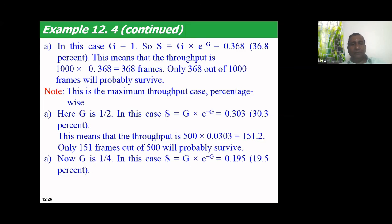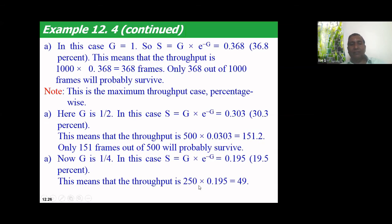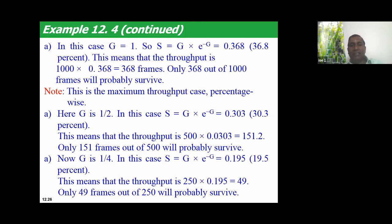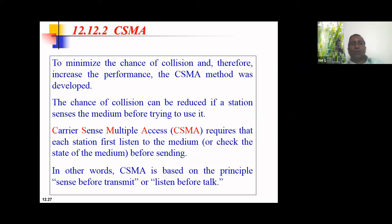When G = 1/4 (250 frames per second), S = (1/4) × e^(−1/4), giving 19.5%. So 250 × 0.195 ≈ 49 frames per second reach the destination. Comparing Pure ALOHA and Slotted ALOHA throughputs, there is a clear and significant improvement with Slotted ALOHA across all three frame rates.